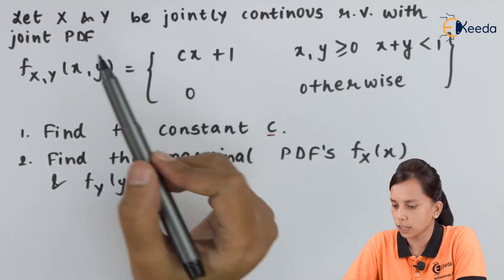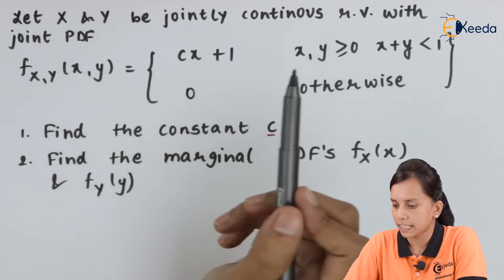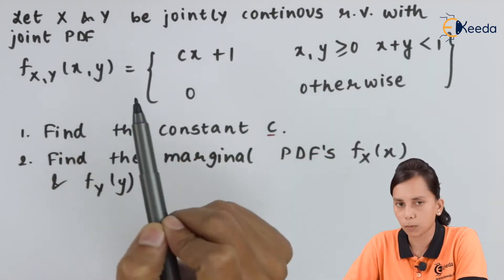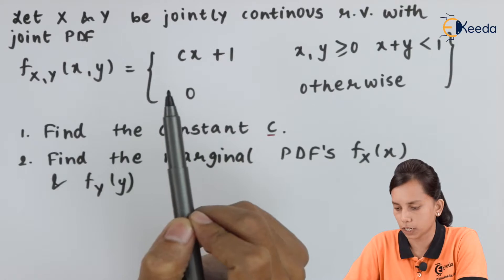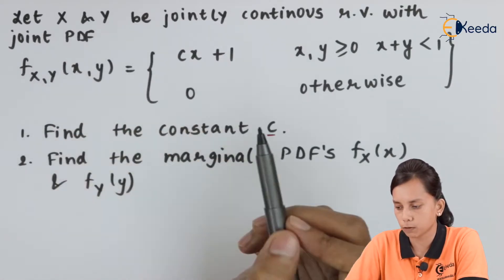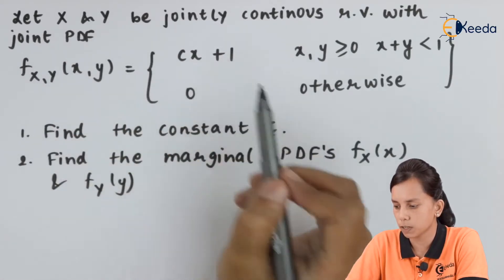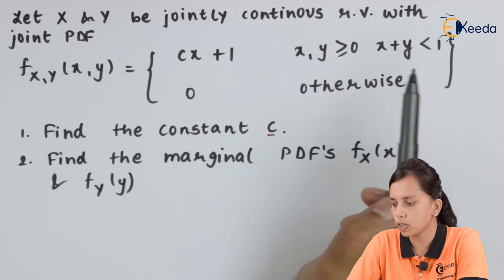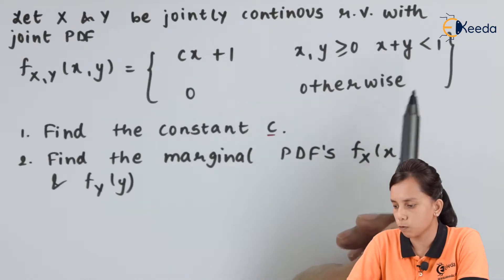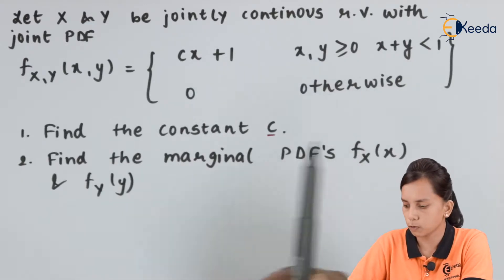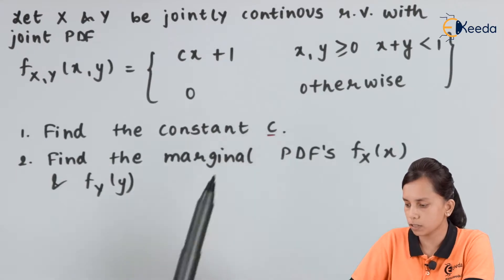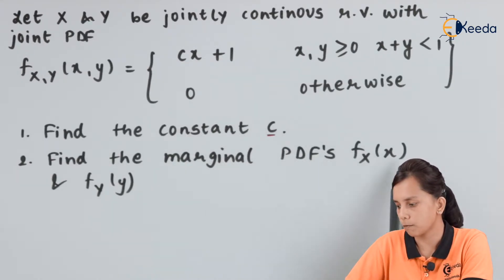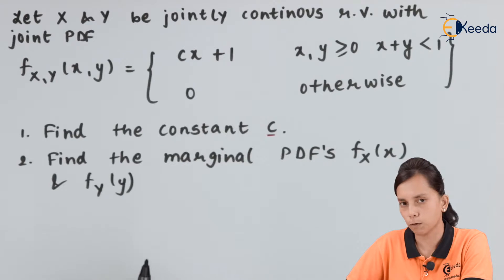This is our question: let x and y be jointly continuous random variables with joint probability density function f(x,y) = c(x+1), where x and y are greater than or equal to 0, x plus y is less than 1, and 0 otherwise. Find the constant c and find the marginal PDFs fx(x) and fy(y).